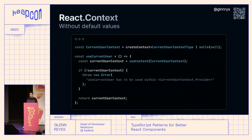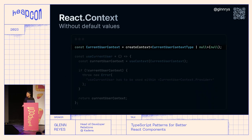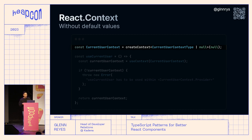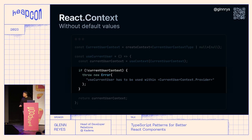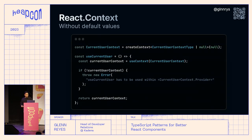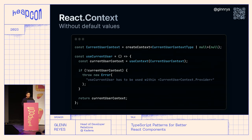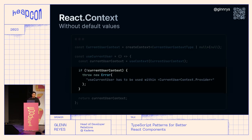For contexts without default values, you initialize with null and pass null to createContext, giving you a correctly typed context that accounts for the possibility of no initial value. The way I check for it in most of my components is to put a statement into a custom hook that checks whether the value exists and throws an error if it doesn't.